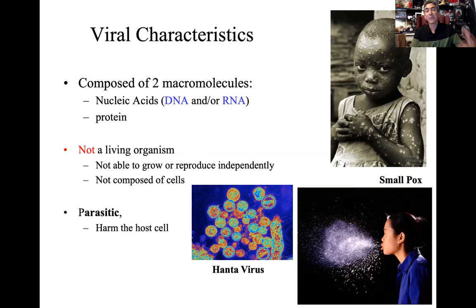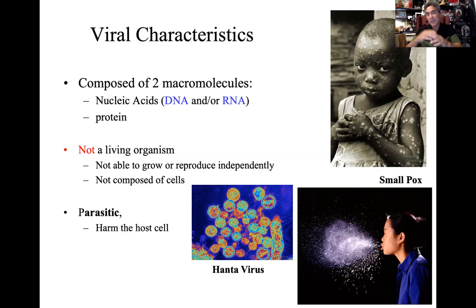A virus is made up of two macromolecules: nucleic acid — the genetic code — and a protective shell around the virus, what we call the capsid. So we have a protein shell and some sort of DNA or RNA genetic instruction protected inside.